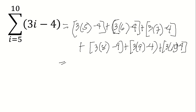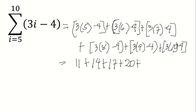So: 3 times 5 is 15, minus 4, the answer is 11. Then 3 times 6 is 18, minus 4, that is 14. Plus 3 times 7 is 21, minus 4, that is 17. Plus 3 times 8 is 24, minus 4, the answer is 20. Plus 3 times 9 is 27, minus 4, the answer is 23.